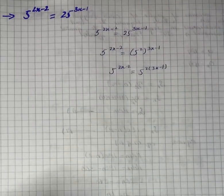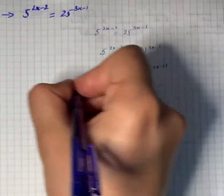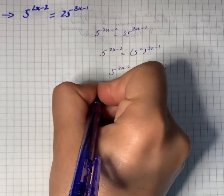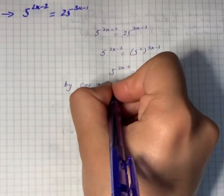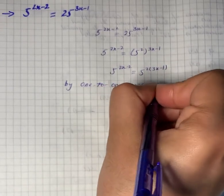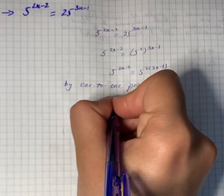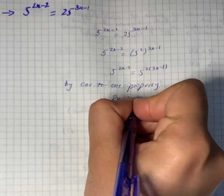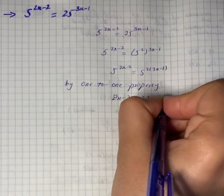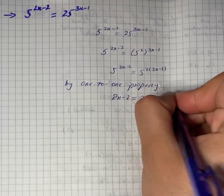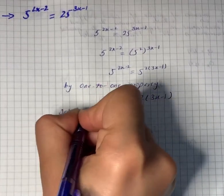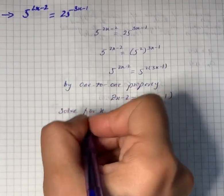Now by the one-to-one property, we can write that 2x minus 2 equals to 2 into 3x minus 1. Now we will solve for x.